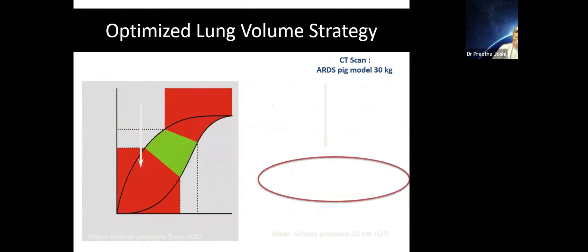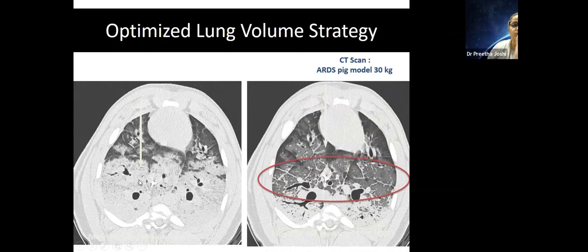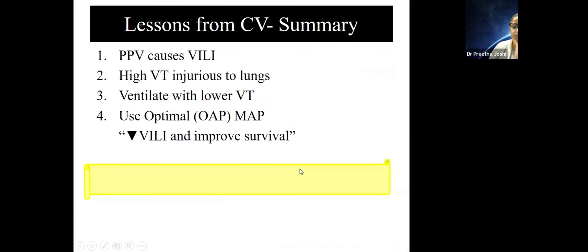We are talking about all this because we are looking at how high-frequency ventilation is different. When you optimize lung volumes you get a much better opened-up lung with much lesser damage. The lessons learned from conventional ventilation are: prolonged positive pressure ventilation can cause ventilator-induced lung injury; high tidal volume is injurious; ventilate with lower tidal volumes; and use optimal MAP.